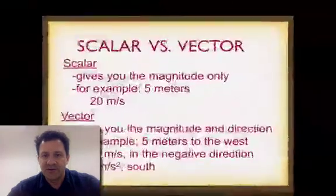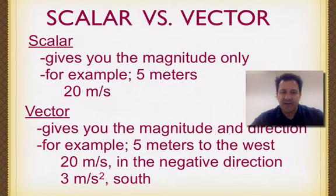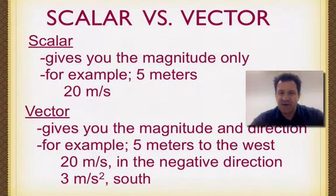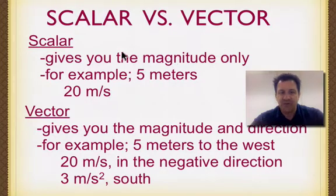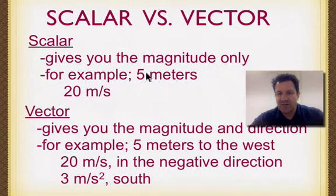Let's go through the specifics of the difference between a scalar and a vector. Vectors are supposed to have direction. So if we have a number — a magnitude or size of something — and it doesn't give us a direction, then that would be a scalar. Scalar gives you the magnitude only. For example, 5 meters could be a distance we traveled and we don't know which direction we went. All we know is that it was 5 meters, so that's a scalar.